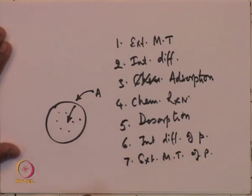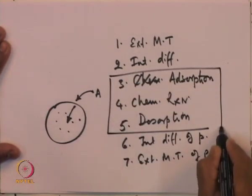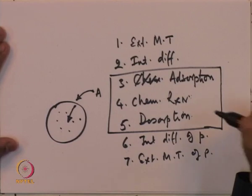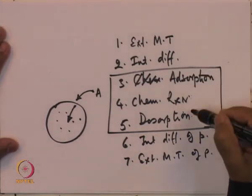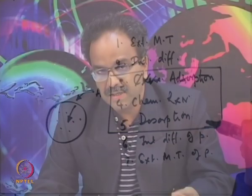To do a quick review: the steps are external mass transfer, then internal diffusion, adsorption, chemical reaction on the surface, desorption of the product, then back-diffusion internally, and finally external mass transfer of the products back to the bulk. We then focused our attention more on adsorption, surface reaction, and desorption — the three steps taking place when the reactant molecule is very close to the catalytic site.